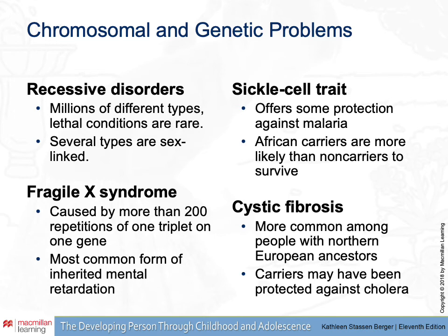Cystic fibrosis is another condition that, like sickle cell, may have been protective at one point in our history, but now results in some significant difficulties with lung function. Chromosomal and genetic problems have different ways of manifesting themselves, and understanding if a person has a certain condition, particularly early, can help prevent health problems that could arise.